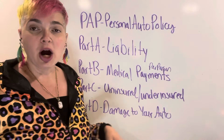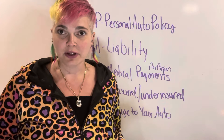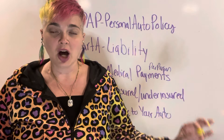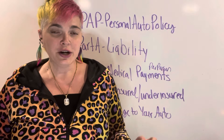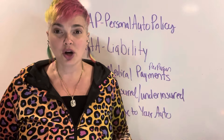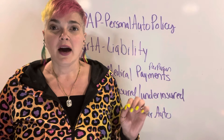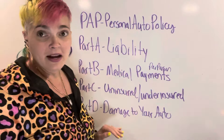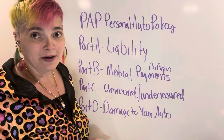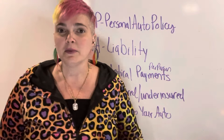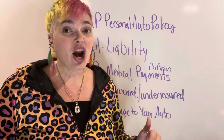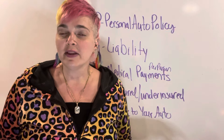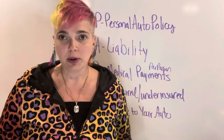Part E is called duties after a loss — these are the things the customer has to do after an accident. The key thing to remember is that you have to call 911 in the event of theft or a hit and run. Not a lot of exams ask about part E, but just in case it's in your text. Part F is general provisions — basically just the rules of the policy and how everyone is supposed to behave.